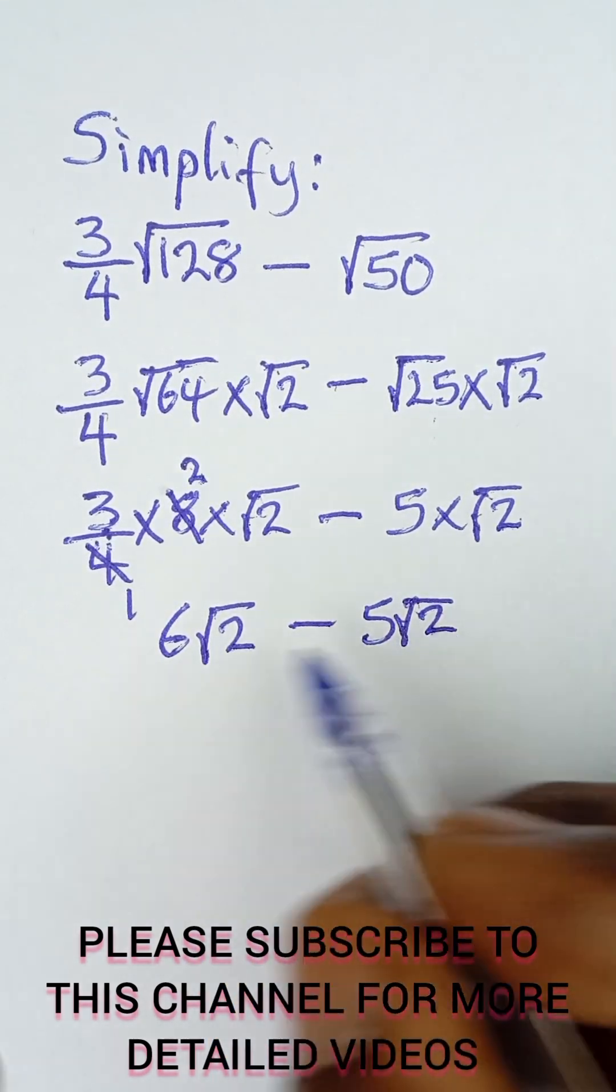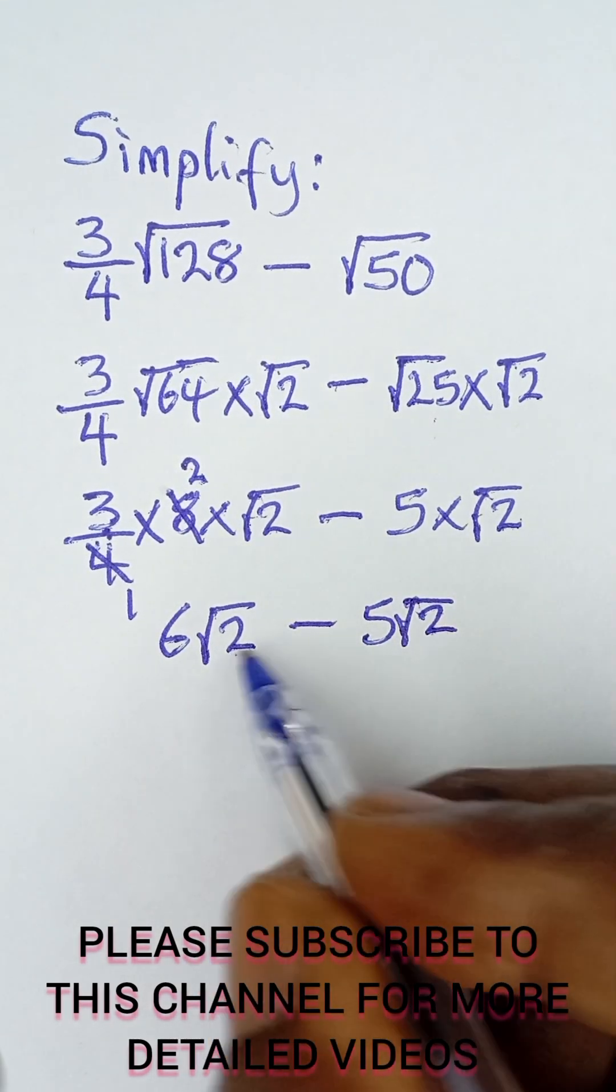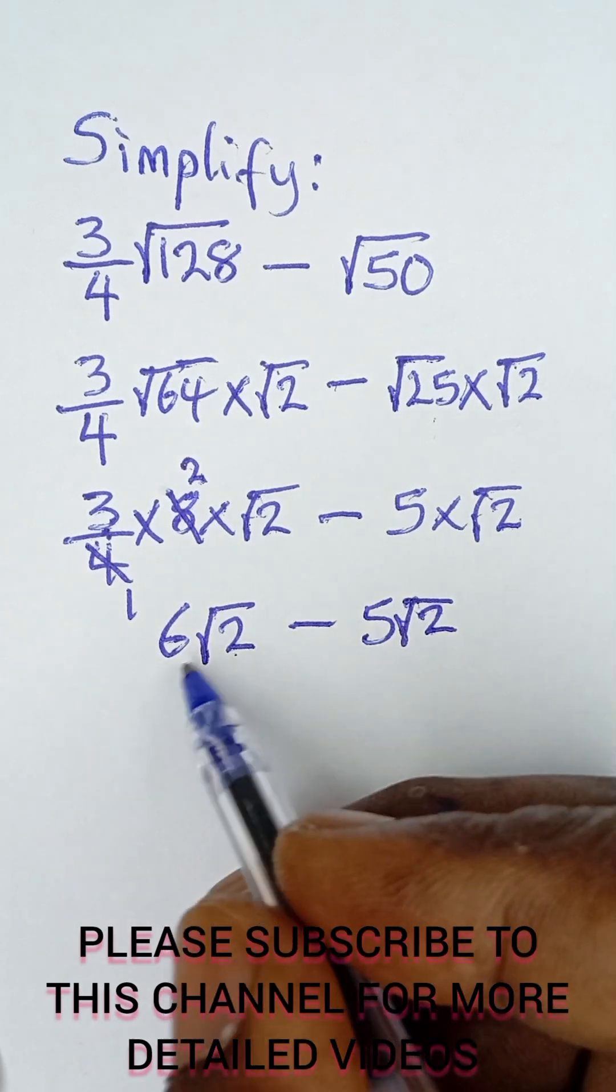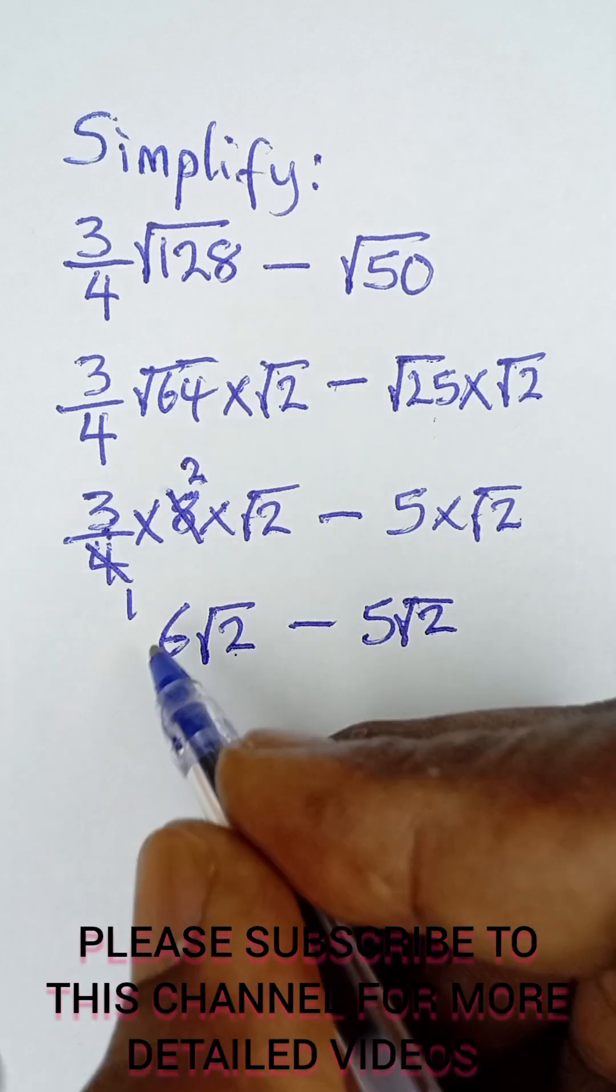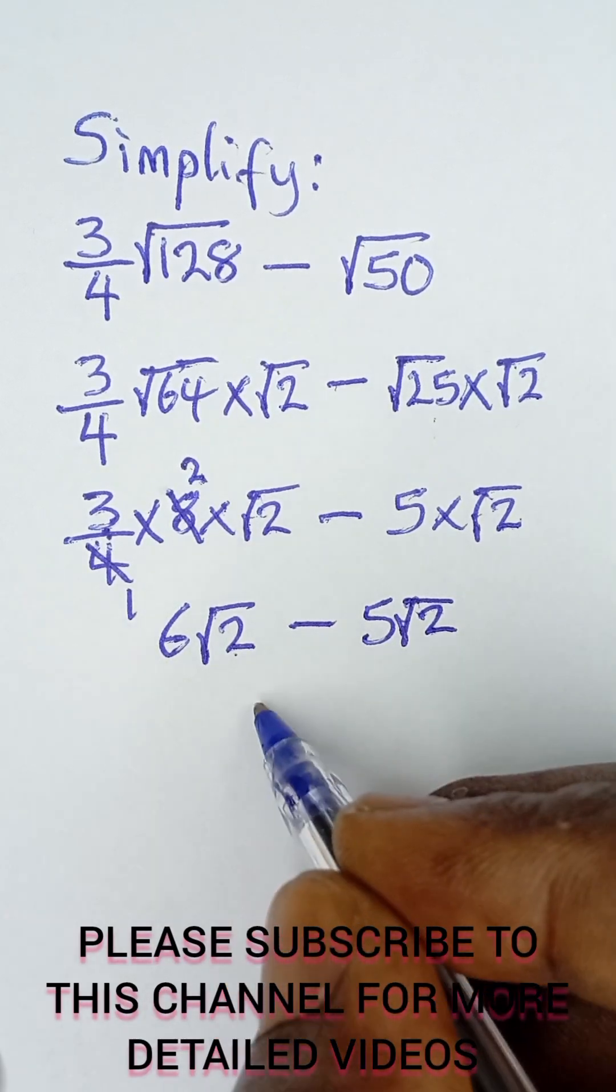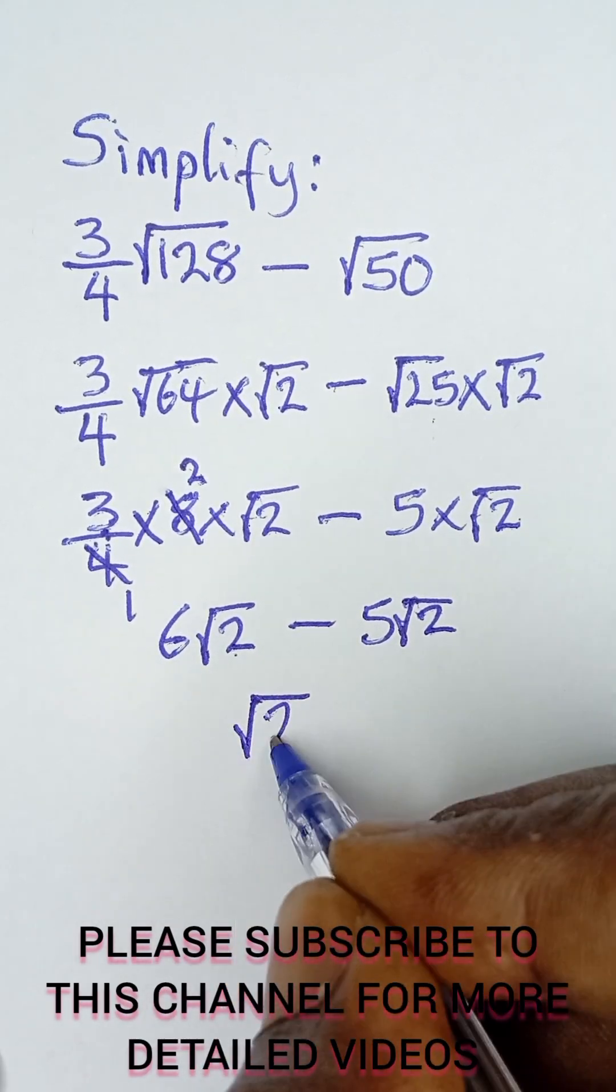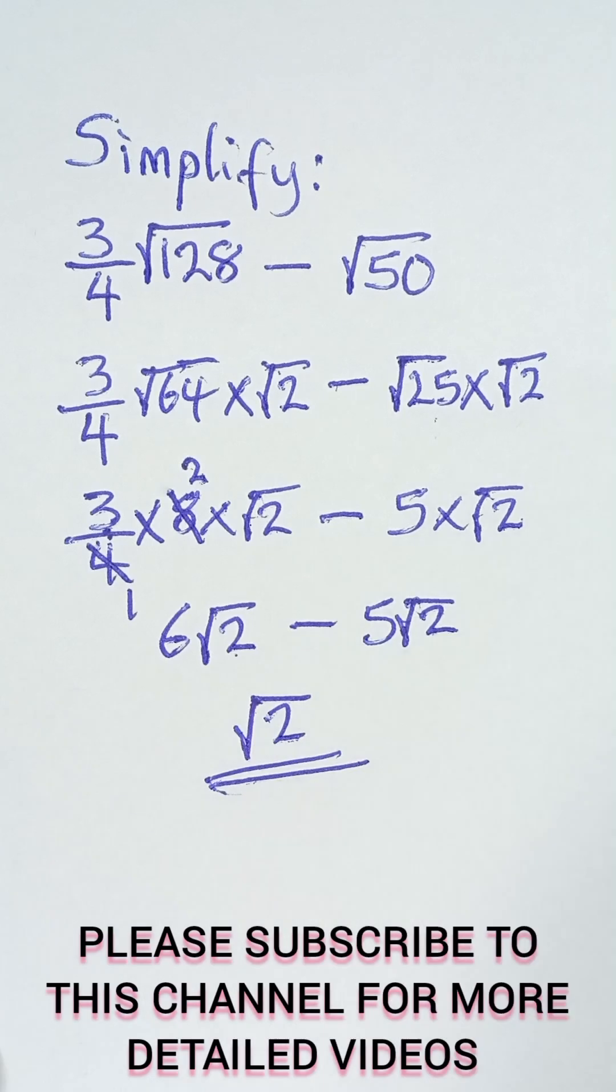These two terms are like terms because they have the same number in the root sign. 6 root 2 minus 5 root 2, we are left with 1 root 2, because 6 minus 5 is 1. So 1 root 2 is the same as root 2, and that's the final answer.